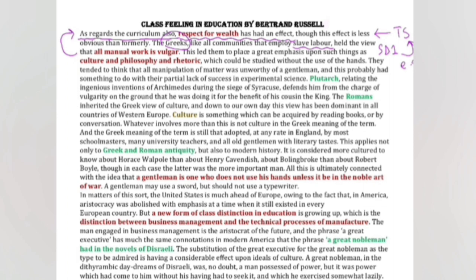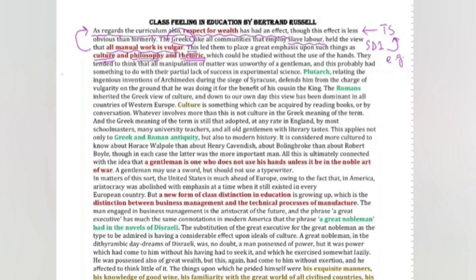So the second line we have understood the meaning of our topic sentence. Now see that our supporting detail one is in this paragraph. The topic sentence is giving us an example, and which example is that? That example is of Greek society. This led them to place a great emphasis - this, kis ki baat ho rhi hai? This se murad kya hai? Ye idea ya ye view that all manual work is vulgar.